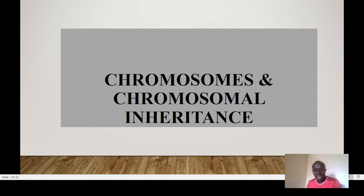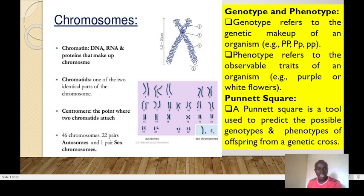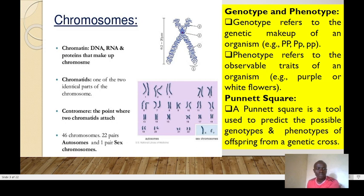Hello and welcome to today's session. Today we are looking at chromosomal inheritance. We need to have learned what we mean by chromosomes — we discussed mitosis and meiosis when looking at introduction to human genetics. In this topic we'll be focusing on explaining the process of chromosomal inheritance. Chromatin is made up of DNA, RNA, and proteins that make up chromosomes, while chromatids are one of the two identical parts of a chromosome, held together at a region called the centromere.